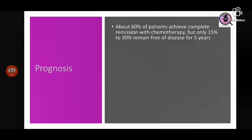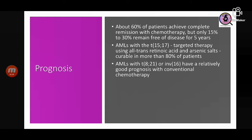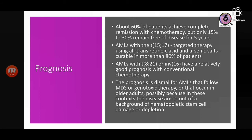About 60 percent of AML patients achieve remission with chemotherapy, but five-year survival is only 15 to 30 percent. AML with t(15;17) is curable in more than 80 percent of patients using ATRA and arsenic. AML with t(8;21) or inversion 16 have relatively better prognosis with conventional chemotherapy and are put in a separate WHO category. Prognosis is dismal for AML following myelodysplastic syndromes or genotoxic therapy, as these arise in older adults from a background of hematopoietic stem cell damage or depletion.